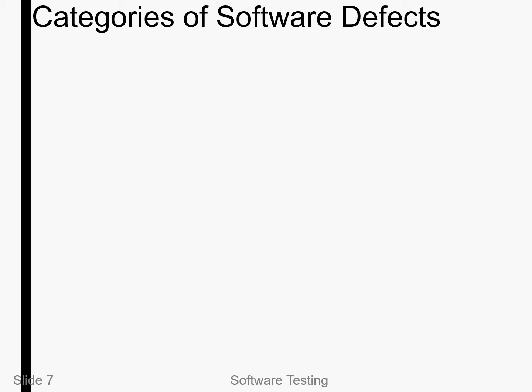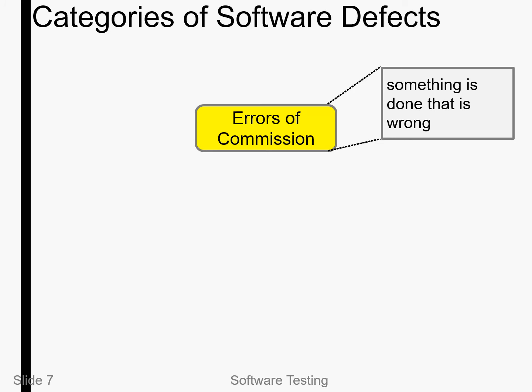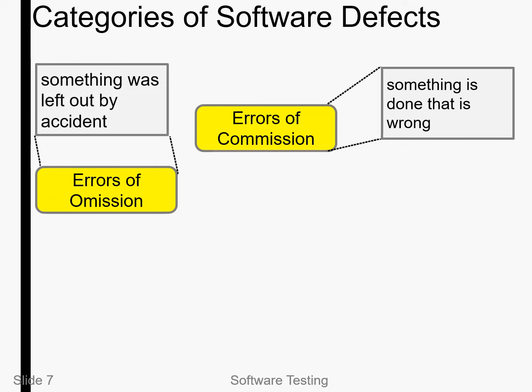Now we can see the categories of software defect. There are three types: failure, fault, and errors. Error of commission is when something wrong occurs. Error of omission means there are some things that are left out by accident — like a garbage value being present because something was omitted.